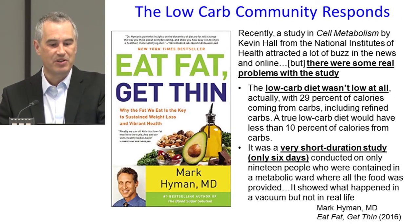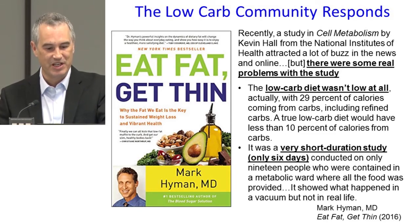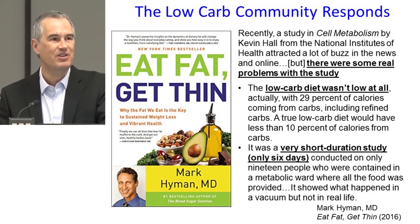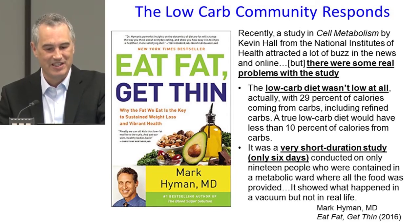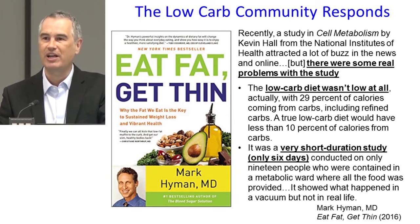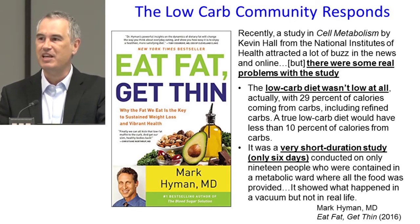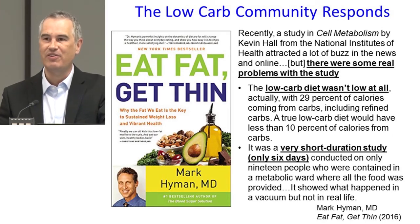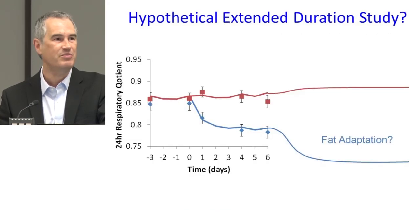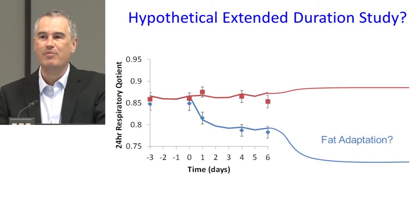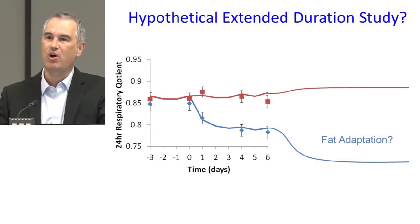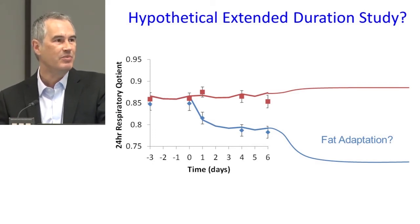When we published that paper, there was a lot of response from the low-carbohydrate community. In particular, Mark Hyman, associated with the Cleveland Clinic, had a book called Eat Fat, Get Thin at the time. The message that reducing fat led to slightly more body fat loss was an offense to him. He wrote that this wasn't a real low-carbohydrate diet — it was only 29% carbs — and that you really have to get down to 10% of calories from carbohydrates to see an effect. He also said it was only a very short study, and if you waited a little longer, people would adapt to the low-carbohydrate diet and increase fat oxidation. I can't deny that such a thing might happen — maybe if we waited a little bit longer, we would have seen that drop in respiratory quotient continue further over time.